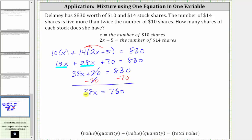The last step is to divide both sides by 38 in order to solve for x. Simplifying, 38 divided by itself simplifies to one, one times x is x. We have x equals 760 divided by 38, which is equal to 20.